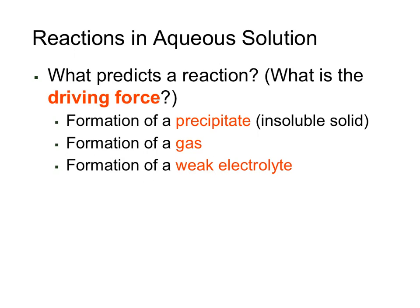In this video we're going to focus on a particular type of reaction called the precipitation reaction, and how we can write those in what we call a net ionic equation. When we're looking at aqueous reactions — reactions in which all of our reactants are dissolved in water — we have to look at what might drive that reaction. Some of those things include the formation of a precipitate, which is an insoluble solid, which will be our focus today. Later on we will also look at reactions driven by gas formation or possibly the formation of a weak electrolyte. Today we are going to focus on precipitate formation in precipitation reactions.